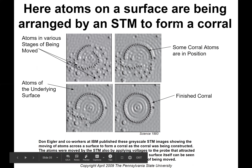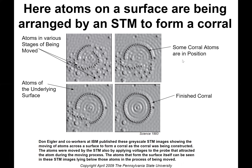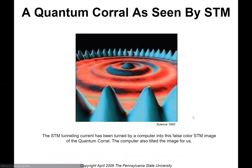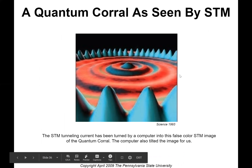Here, atoms on a surface are being arranged by an STM to form a corral — this is a famous picture. They've made this quantum corral out of individual atoms. I imagine the patience required to do that is super high.